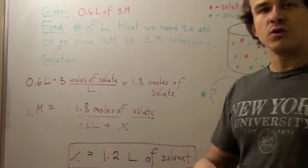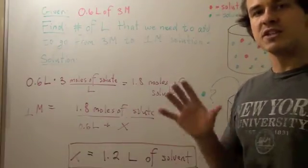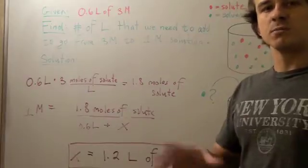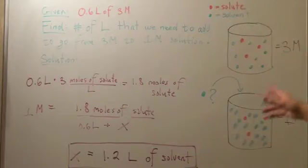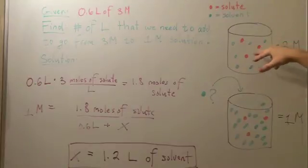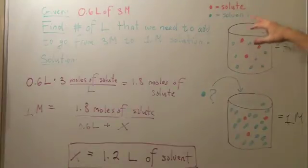Whenever we dilute, we want to keep the number of solute the same and we want to increase the number of solvent. So this is our current situation. We have a 3 molar solution where the red dots are the solute, blue dots are the solvent.